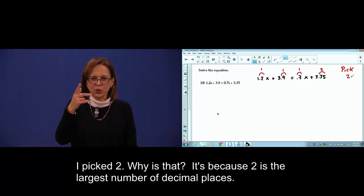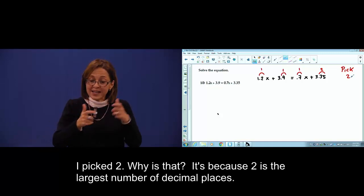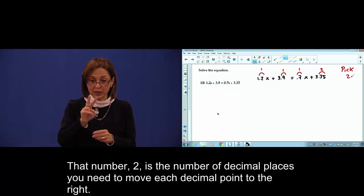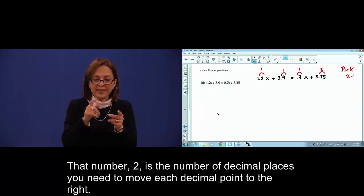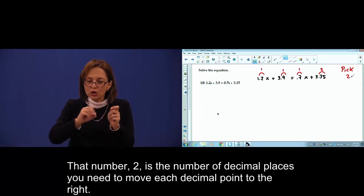I pick two. Why? Because two is the largest number of decimals. Now, that number two is the number of places you have to move the point to the right.